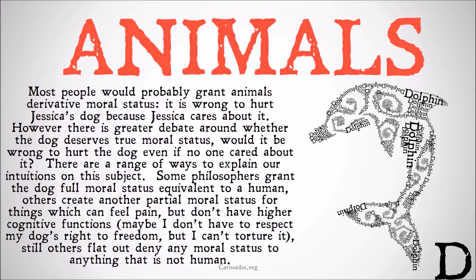Most people would probably grant animals at least derivative moral status — in other words, it's wrong to hurt Jessica's dog because Jessica cares about it. However, there is greater debate around whether the dog deserves true moral status. Would it be wrong to hurt the dog even if no one cared about it? Or to put it another way, is it wrong to hurt or kill animals for food if no one cares about them?